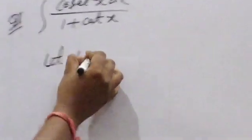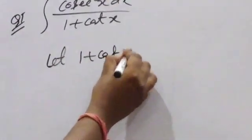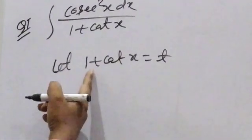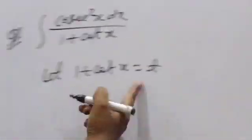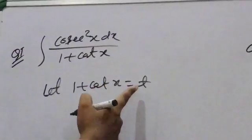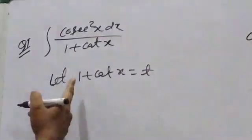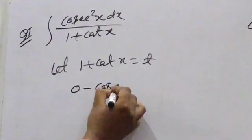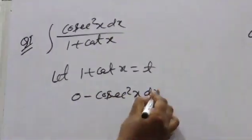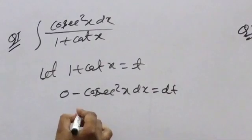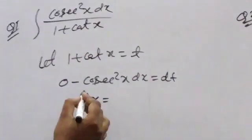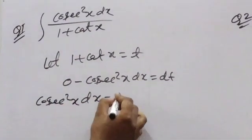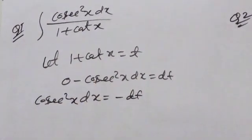Let 1 + cot x = T. Then, differentiation of both sides: differentiation of 1 is 0, cot x gives minus cosec²x, so cosec²x dx = minus dT. Therefore, cosec²x dx = -dT. Very simple.